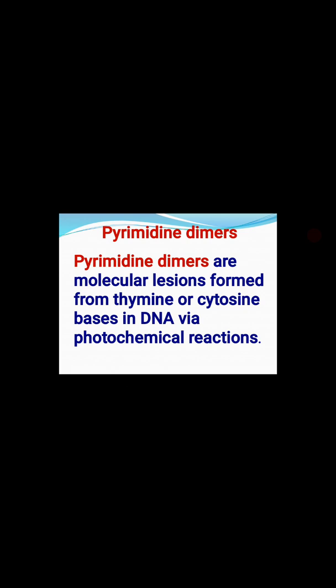So what are the pyrimidines? In DNA, the two major pyrimidines are cytosine and thymine. In the case of RNA, there is also uracil. So pyrimidine dimers — what are pyrimidine dimers? These are molecular lesions found in DNA.